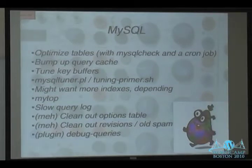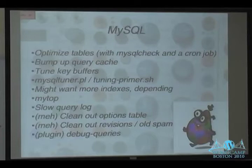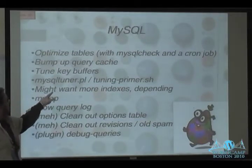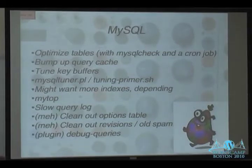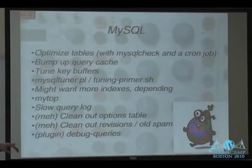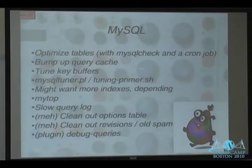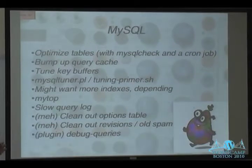Tuning key buffers can have a significant effect. You can be insulated from worrying about the query cache and key buffers by using MySQL Tuner or tuningprimer.sh. You might want more indices on tables depending. Check the MySQL slow query log. You can use the Debug Queries plugin, which lists all queries running in your WordPress, then run EXPLAIN on them. Anything that appears in a WHERE clause, you want an index on — doing that gets you 99% better.